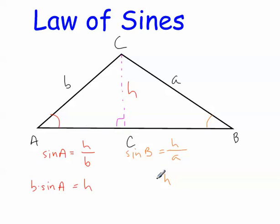I get H equals A sine of B. Now, since H equals A sine of B, and H also equals B sine of A, I can say that B sine of A is equal to A sine of B.